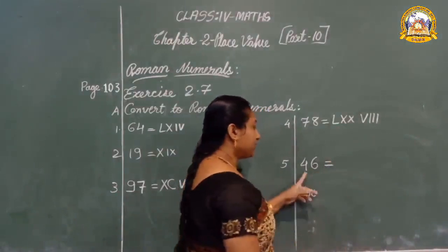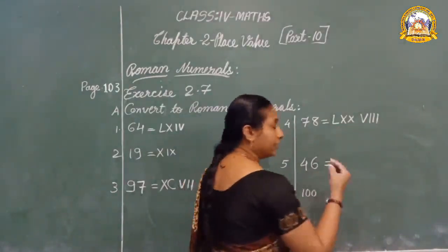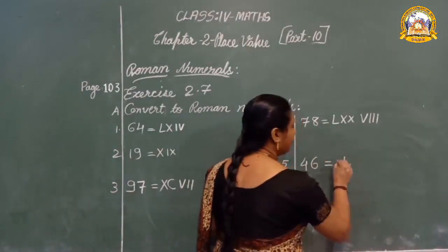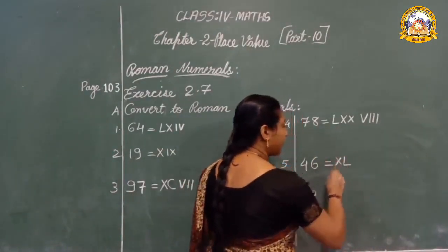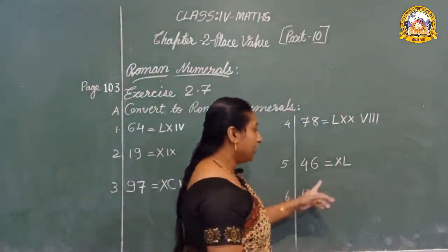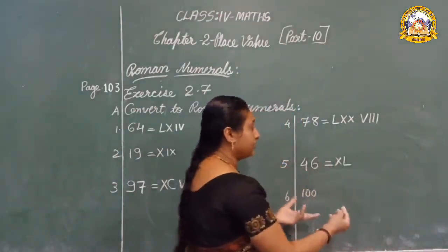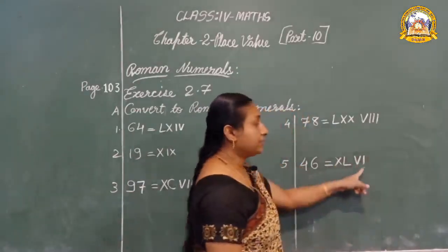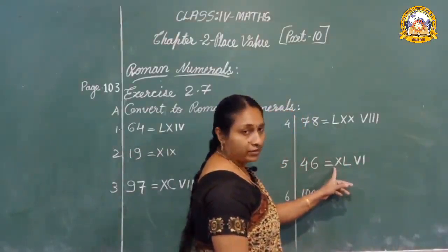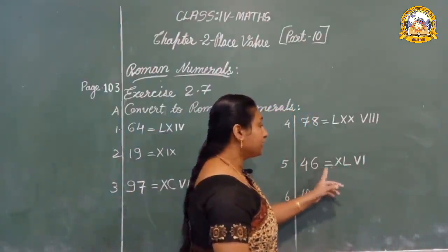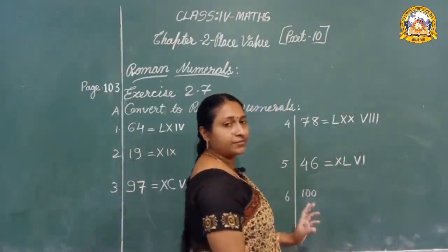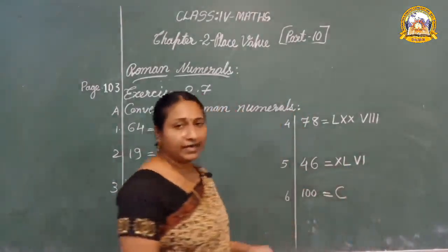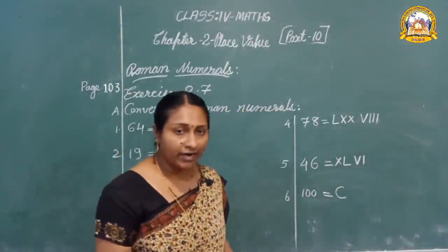Next, 46. For 40: fifty minus ten — XL. Then for 6 — VI. So 46 is XLVI. Next, 100 — C for 100.